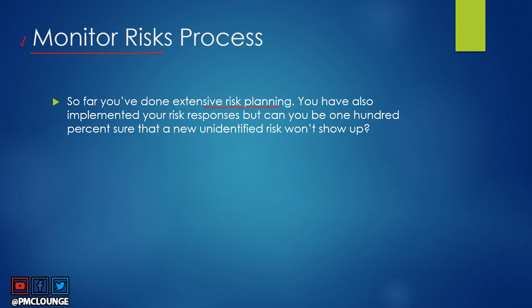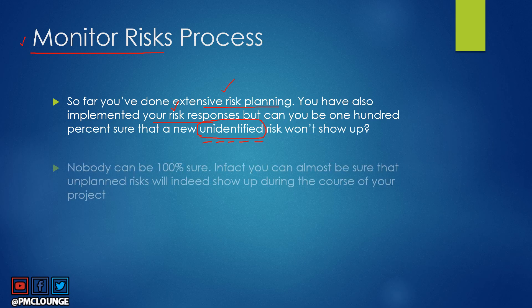So far in the risk management knowledge area, you've done extensive risk planning and implemented your risk responses. But can you be one hundred percent sure that a new, unidentified risk won't show up? The keyword here is 'unidentified.' After all those processes and risk responses, nobody can be one hundred percent sure. In fact, you can almost be certain that unplanned risks will indeed show up during the course of your project.